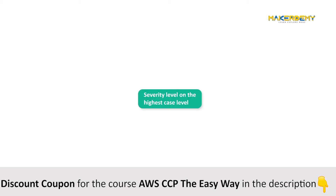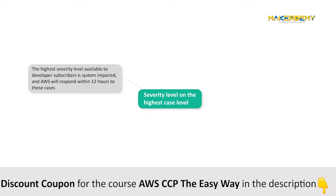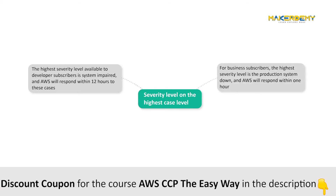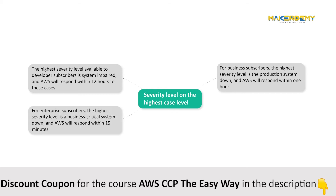Let's focus on the highest case severity level available to each plan and AWS's agreed response time for that severity level. The highest severity level available to developer subscribers is system impaired, and AWS will respond within 12 hours to these cases. For business subscribers, the highest severity level is production system down, and AWS will respond within 1 hour. For enterprise subscribers, the highest severity level is business-critical system down, and AWS will respond within 15 minutes. Note that the agreed response time only applies to the initial response; the timeframe for follow-ups will vary.